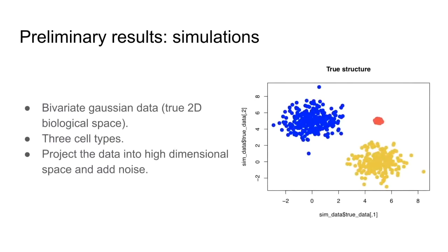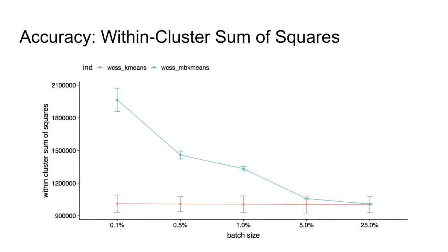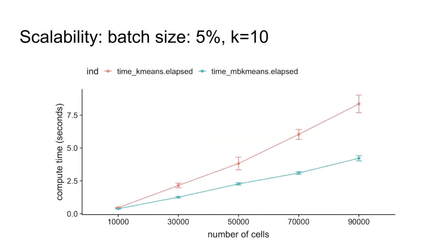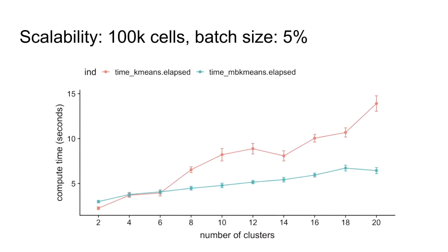We have some preliminary simulation benchmarks showing that with mini-batch k-means you get accuracy comparable to k-means when you use about 5% of the data as your random mini-batch, and that it is indeed faster than full k-means, at least when the batch size is small. Most importantly it is more scalable than k-means, both when you grow in the number of observations to cluster and in the number of clusters, which is very promising.